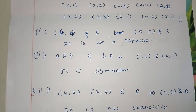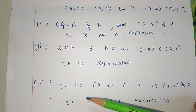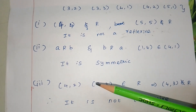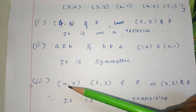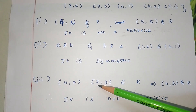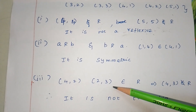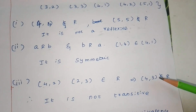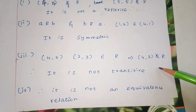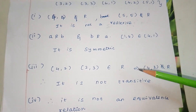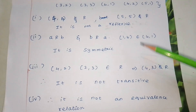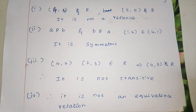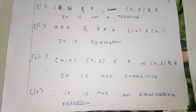Next, transitive: if A is related to B and B is related to C, then A must be related to C. For example, (4,2) and (2,3) both belong to R. So we check if (4,3) belongs to R — but 4+3=7, which is greater than 6, so (4,3) is not in R. Therefore it is not transitive. This is not an equivalence relation. Thank you.